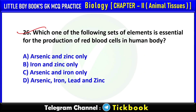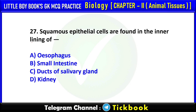Q26. Which one of the following sets of elements is essential for the production of red blood cells in the human body? Option number B: Iron and zinc only.